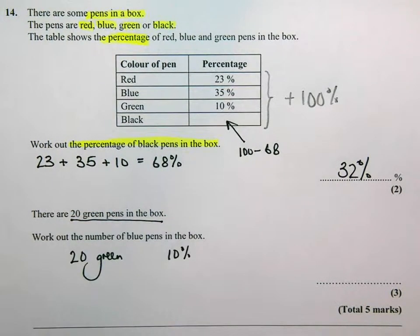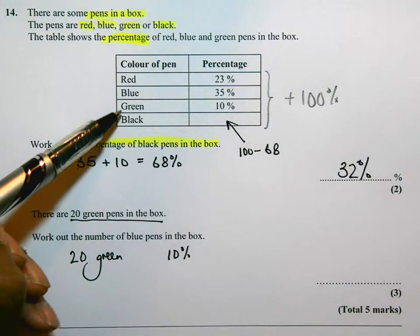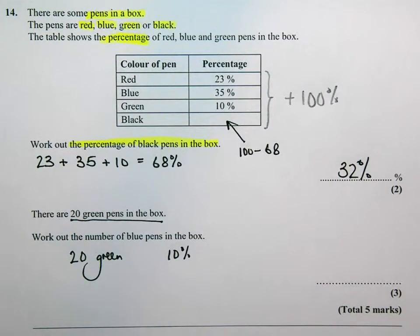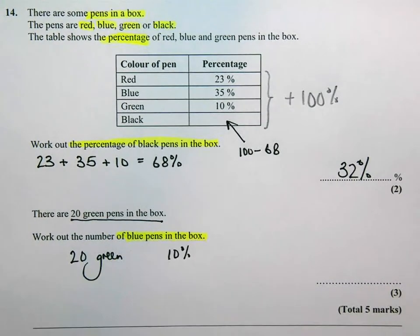So 10% of the box is green pens. Now they want us to work out how many blue pens. So the question is, work out the number of blue pens in the box.